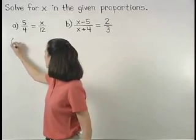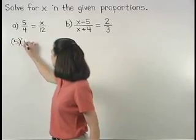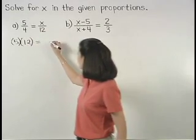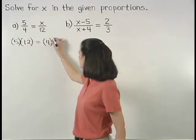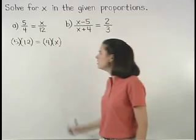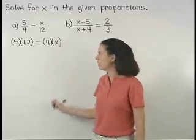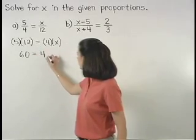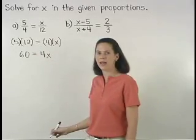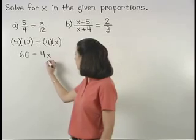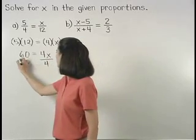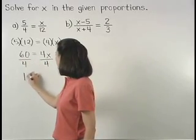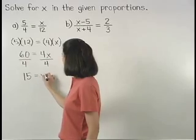5 times 12, equals the product of the means, 4 times x. So we have 5 times 12, or 60, equals 4 times x, or 4x. And dividing both sides by 4, 15 equals x.